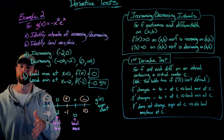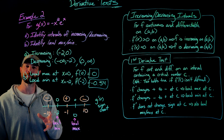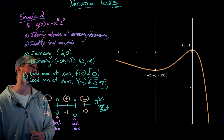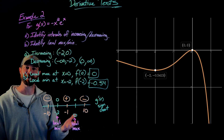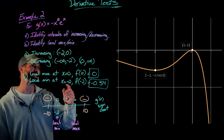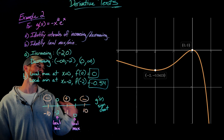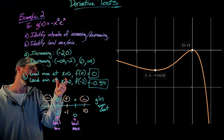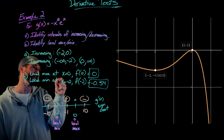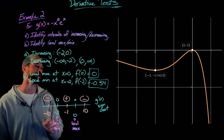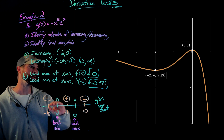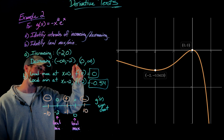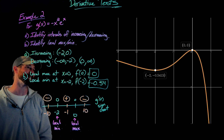Because this is a more interesting function than a normal polynomial, let's look at a graphical representation of this function to verify. We can confirm that the function is decreasing from negative infinity to negative 2 and from 0 to infinity, increasing on the interval from negative 2 to 0. The local maximum value at x equals 0 has an output of 0, and the local minimum value occurs at x equals negative 2.